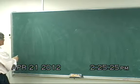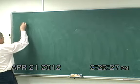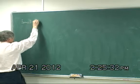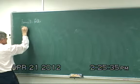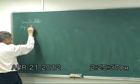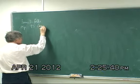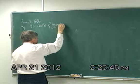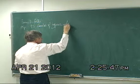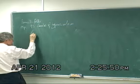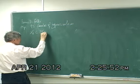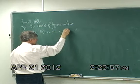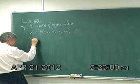I'm talking about Fano threefolds, especially the 95 families of hypersurfaces — X_d in P(a_1, a_2, a_3, a_4) with the sum of the a_i's equal to d.